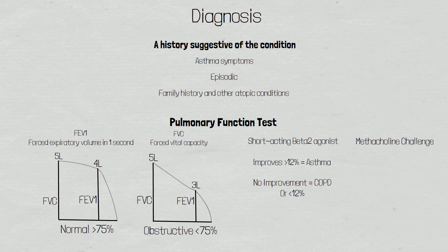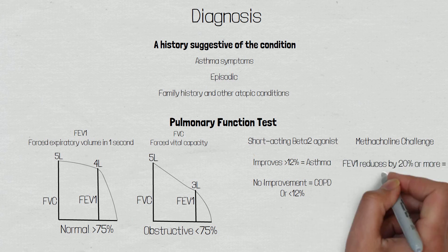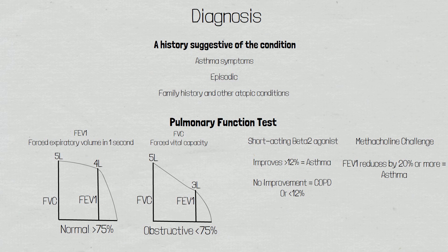The pulmonary function test is performed, and then methacholine is administered. Methacholine is a cholinergic agonist which will act on the muscarinic receptors within the bronchioles, causing constriction. If a patient has asthma, then their airways are going to narrow significantly, as they are hyper-responsive. The pulmonary function test is then repeated, and if there is a drop in the forced expiratory volume in one second of 20% or greater, then this is indicative of asthma. It is important to make yourself familiar with local guidelines on investigations and diagnosis.